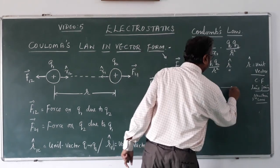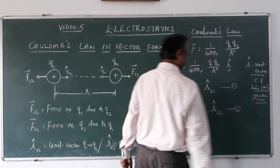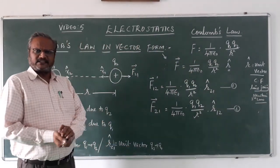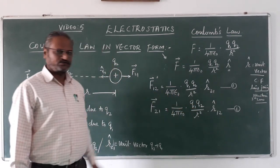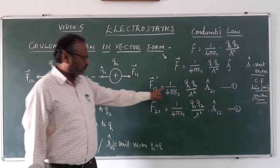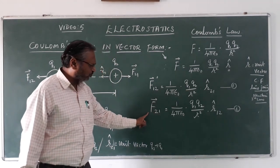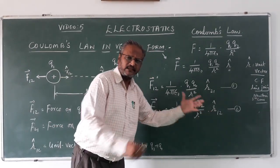Let us call this as equation number 1, equation number 2. Very clearly we can see that this factor, the whole thing has not changed. F₁₂ and r̂₂₁, F₂₁ r̂₁₂, they are repulsive.